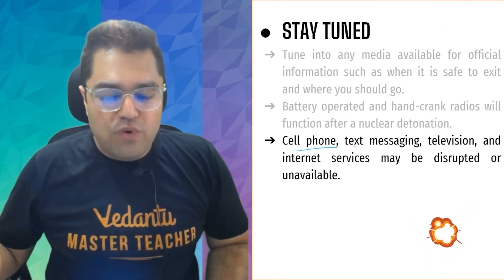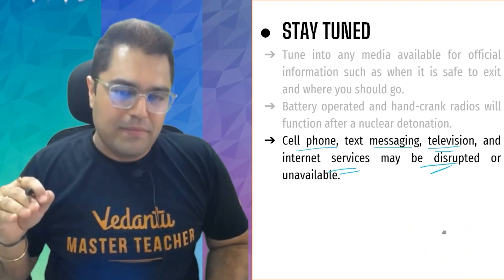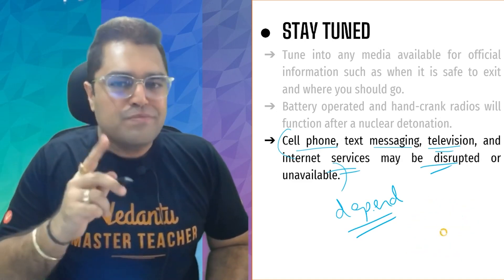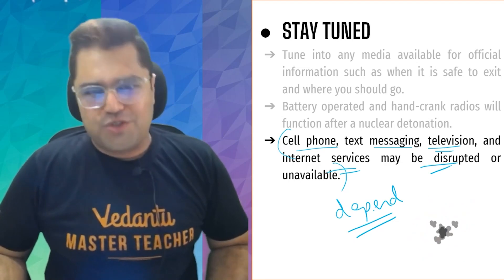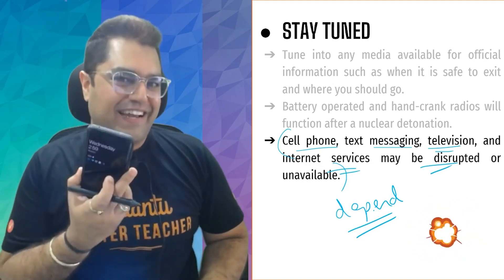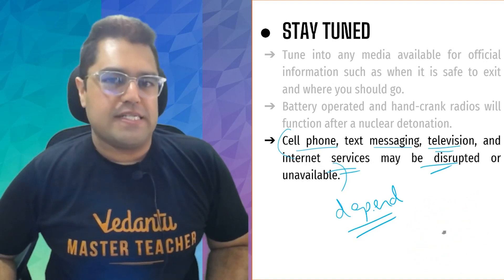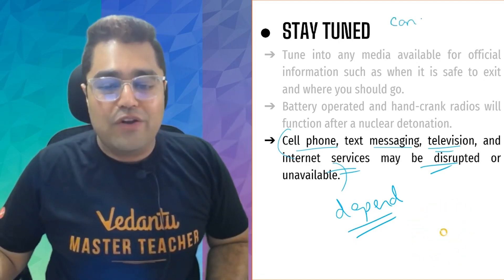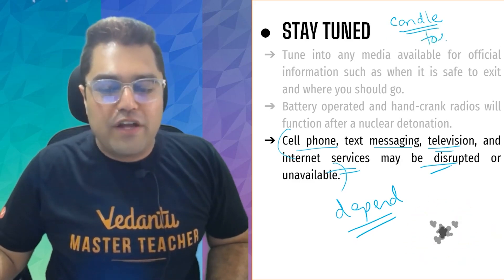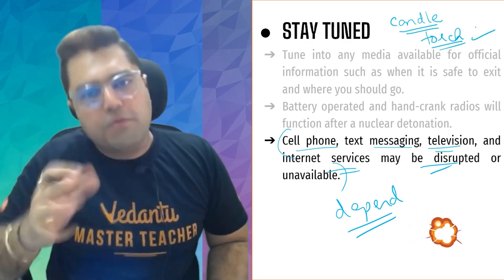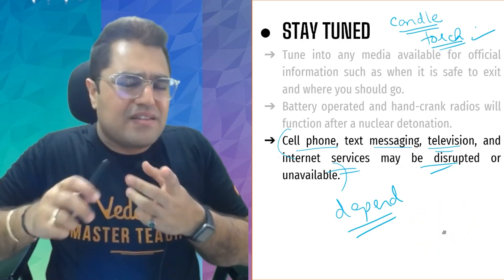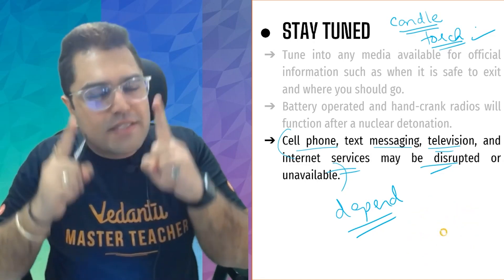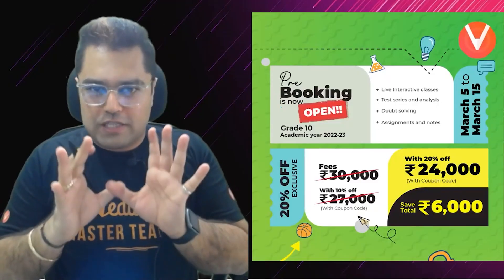Cell phone, text messaging, television, internet services — khatam. Tabhi pata chalta hai hamaari dependency kitni zyada hai in cheezon pe. Isi liye beta, basic example — ghar pe light chali gayi raat ko, kya karoge? Torch light use karenge, cell phone ki? What if your cell phone has no power? What if electromagnetic radiation aapka cell phone wipe off kar de? Isi liye beta candle aur machis rakho — bhoat important. Ek battery operated torch rakho. The next world war will not be a bomb attack — it will be a cyber attack, a digital attack. Isliye non-digital cheezein bhi zaroori hain.